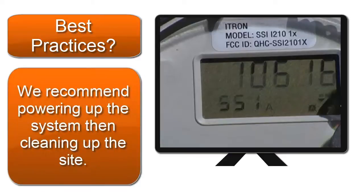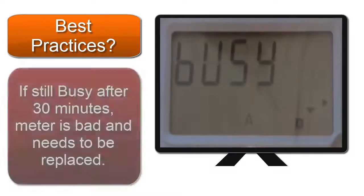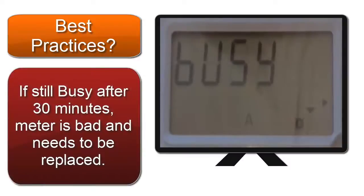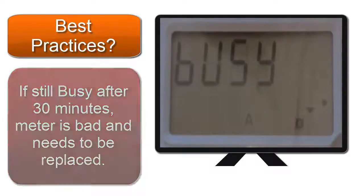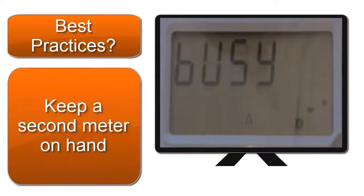It is a good practice to have a second meter on hand in the event that the unit turns out to be faulty. If it is still showing busy after a half an hour, you have a problem. The meter is bad and you need to replace it.